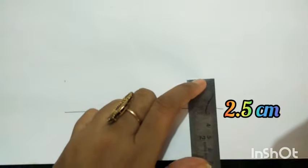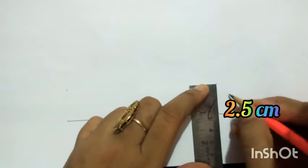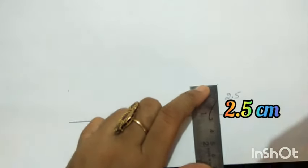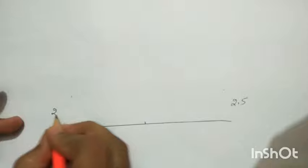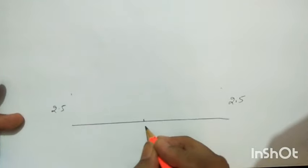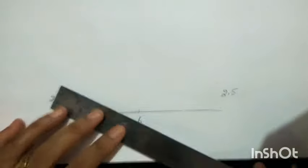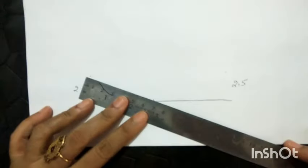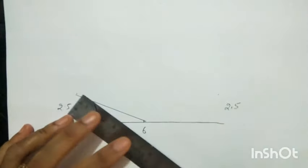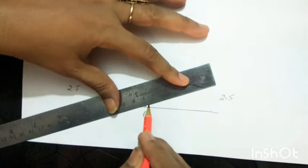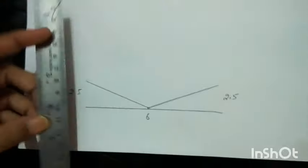Mark 2.5 on each side of the 6 centimeter center. Join these three points and draw straight lines.